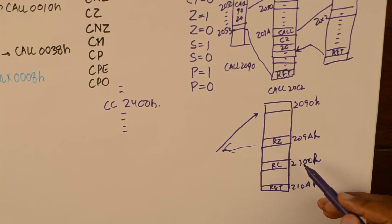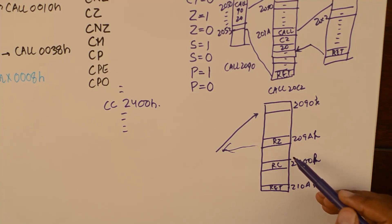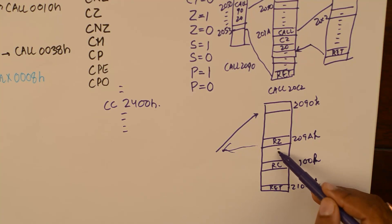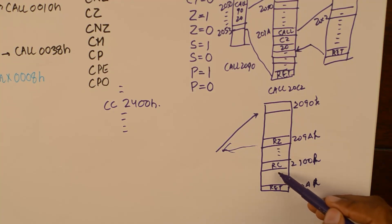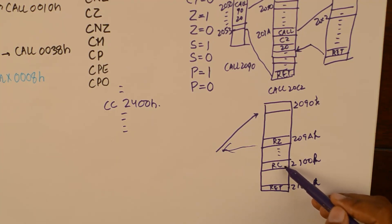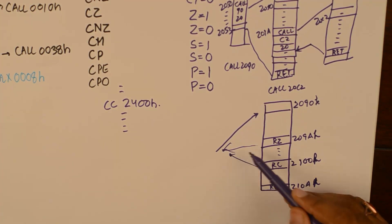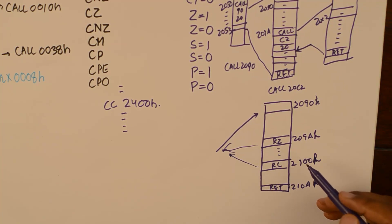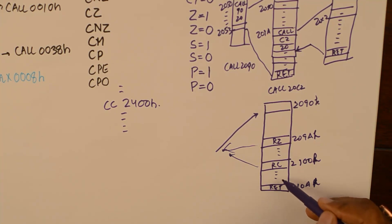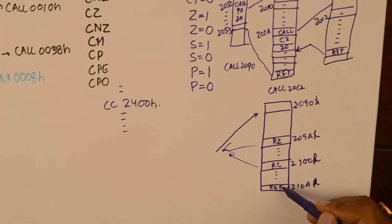It is a super useful function in a subroutine that we can return to the main program after checking a condition. If the condition is met we go back; if not we continue working within the subroutine. At a later stage if carry flag is set the return-if-carry sends us back, otherwise the subroutine finishes with an unconditional RET.